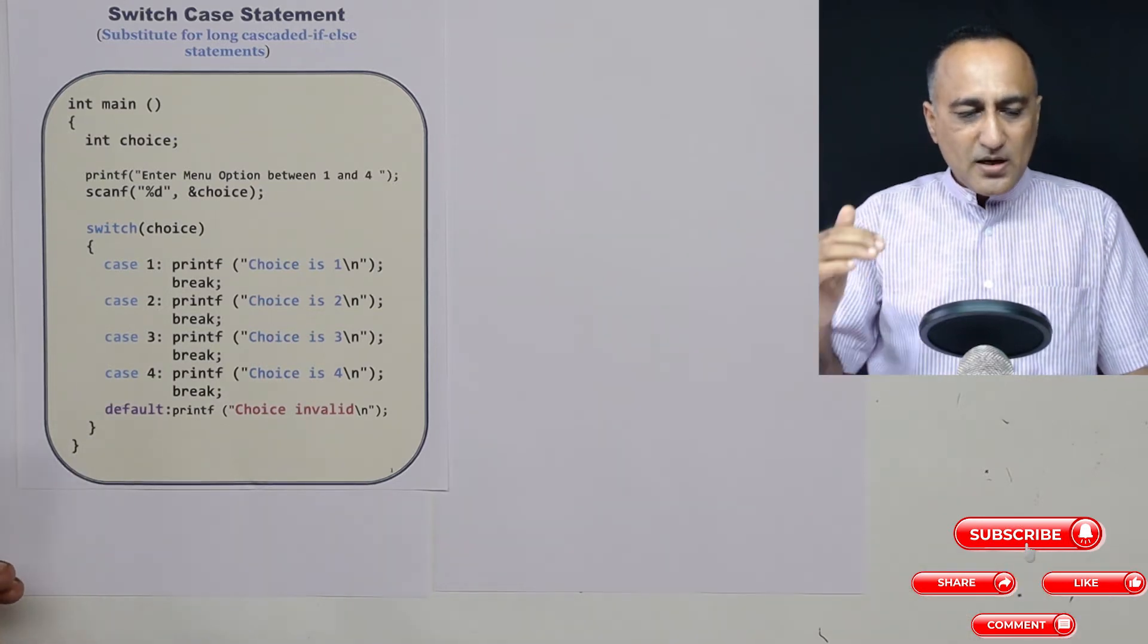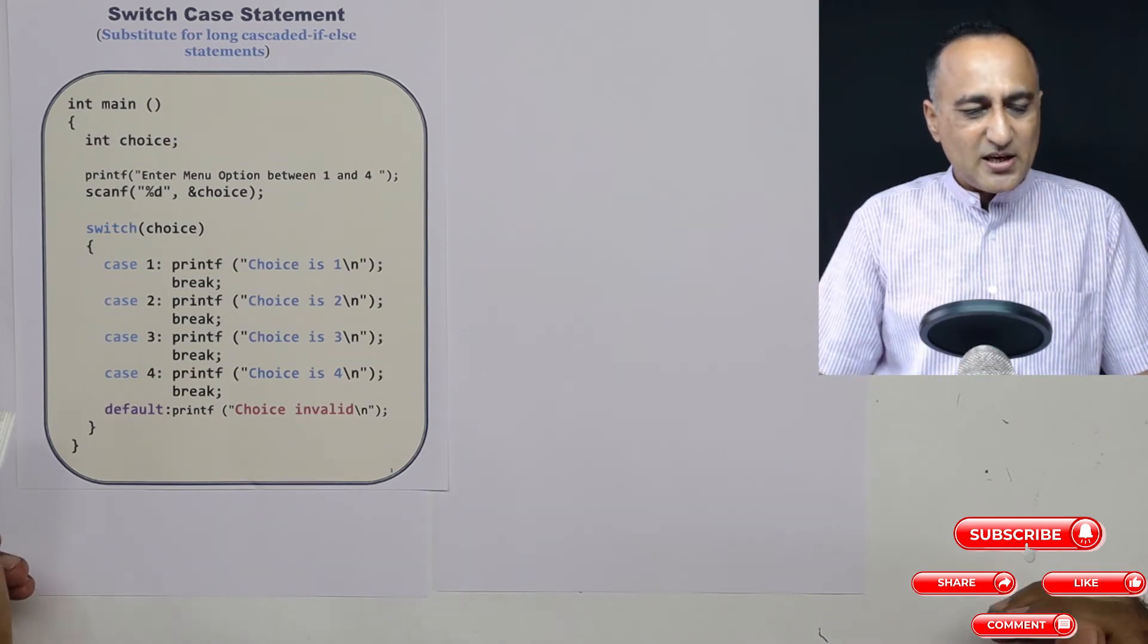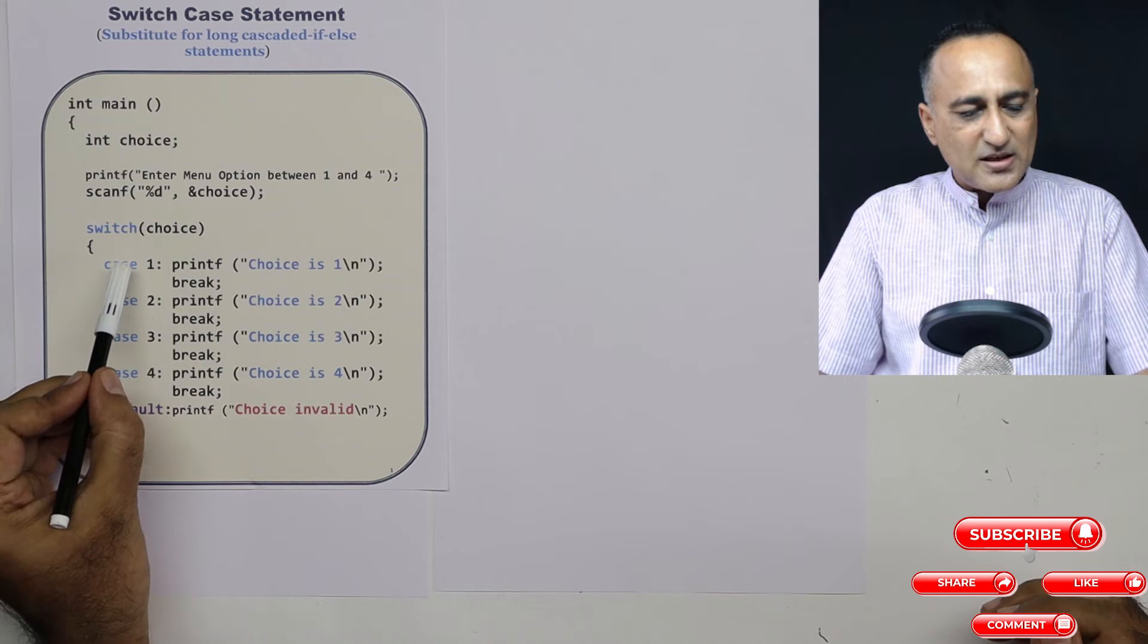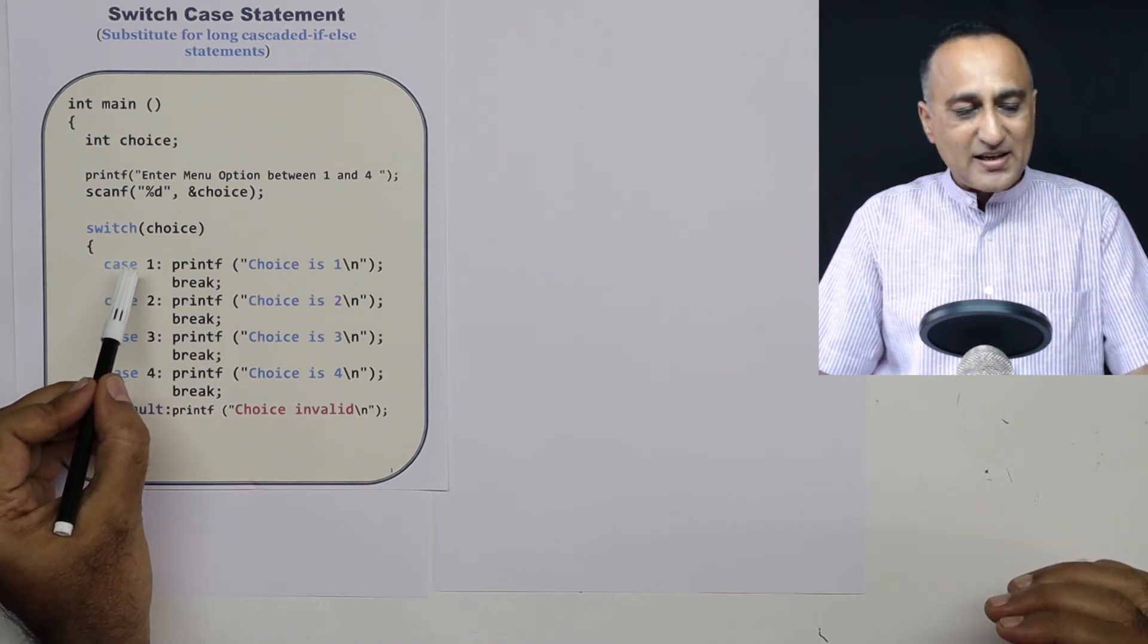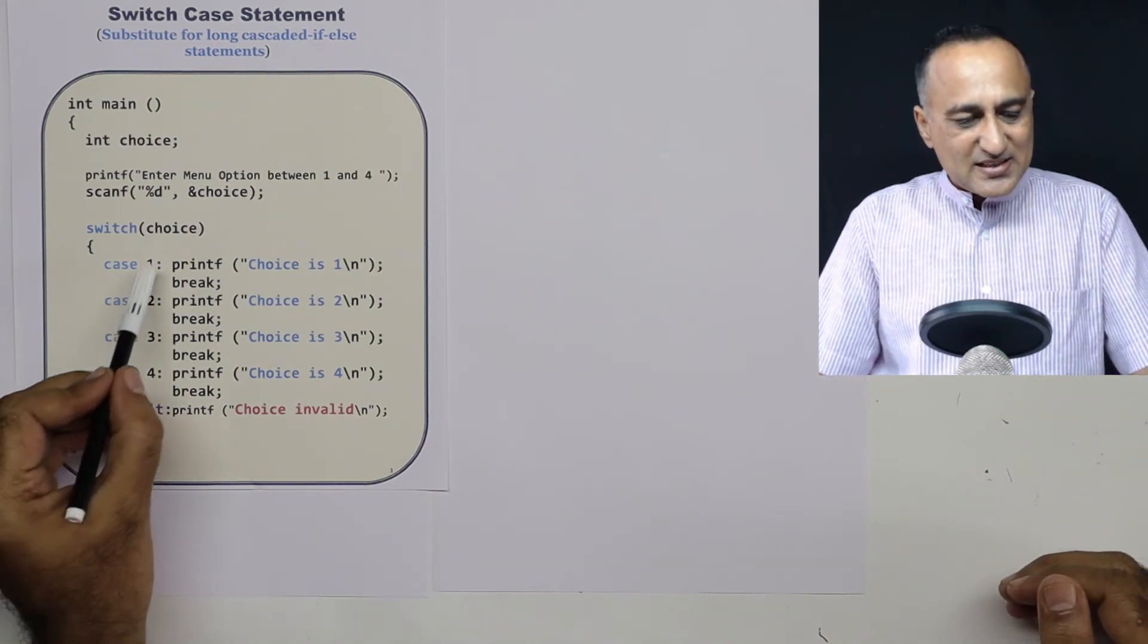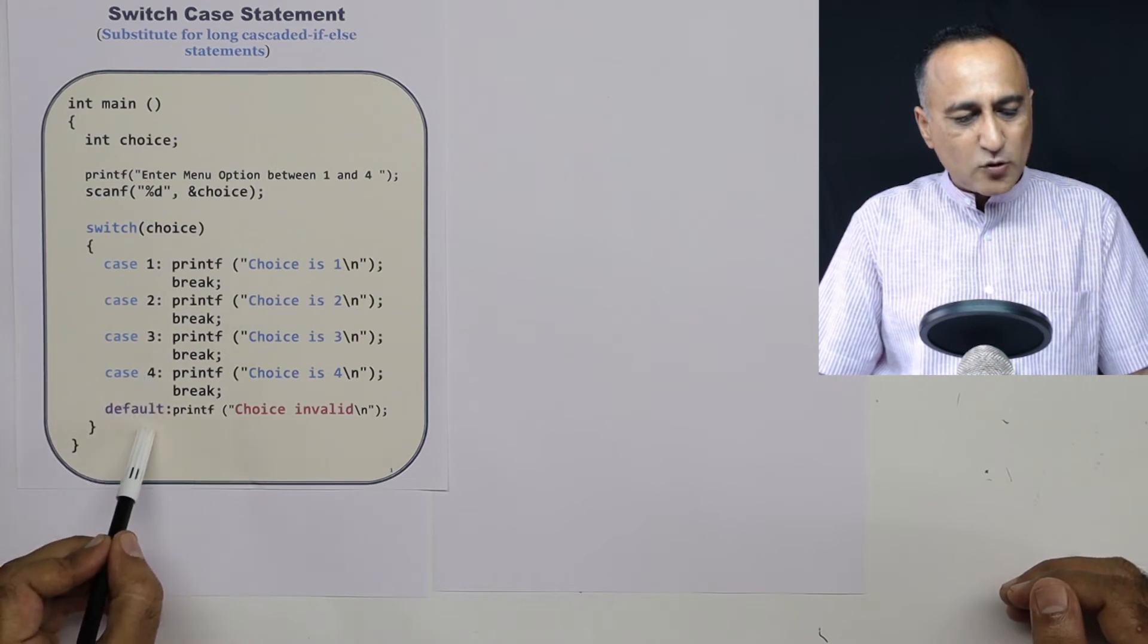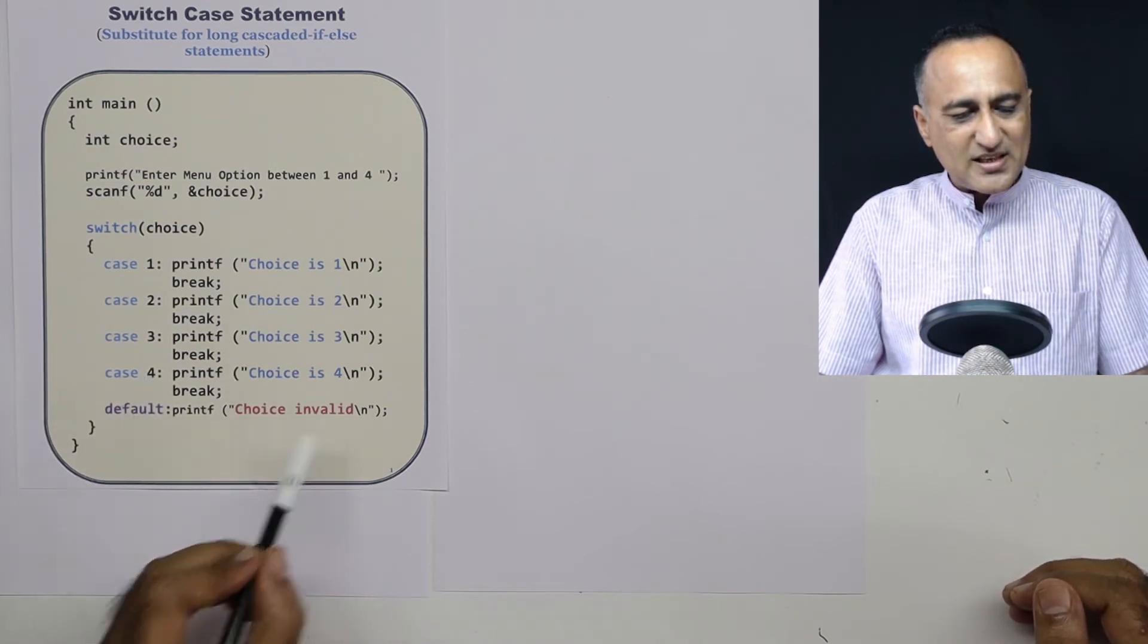So a switch case is a statement or a construct in C which helps you make choices like when you're designing a menu. Let's say you enter the number 6. Since 6 doesn't match with any of these labels, it's going to go to default and it's going to say 'choice is invalid'.